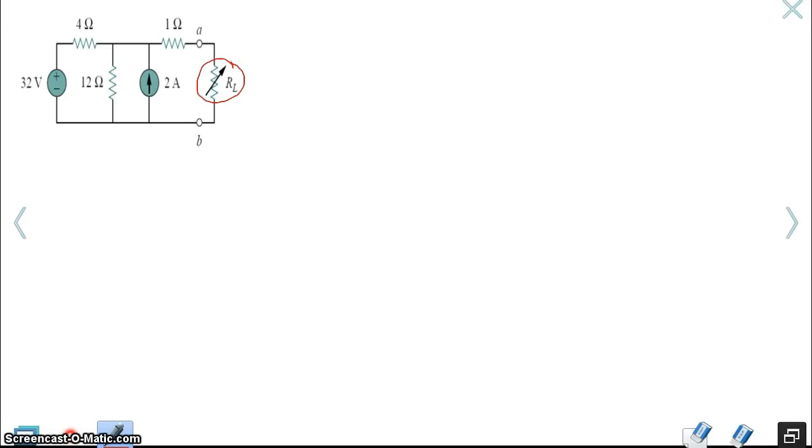The Thevenin equivalent circuit is basically a voltage source with a series resistance. So the goal is to take everything to the left-hand side of the terminals A and B, and reduce them, or find an equivalent circuit model. This is A, this is B, this is VTH, that's the Thevenin voltage, and here's my Thevenin resistance. Our goal is to find out what is VTH and what is RTH.